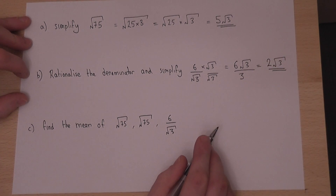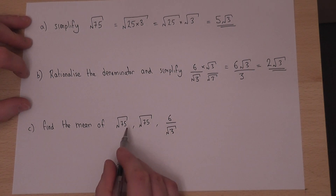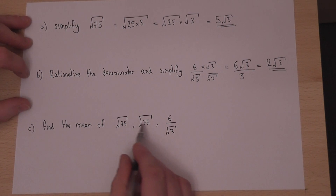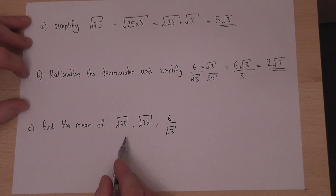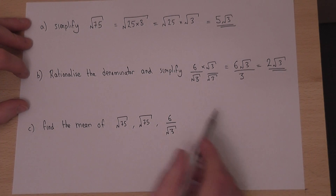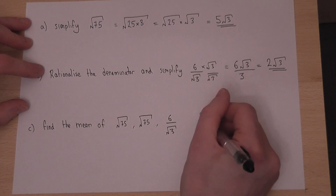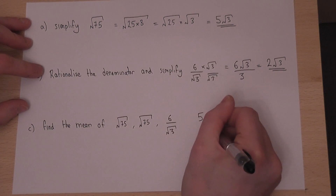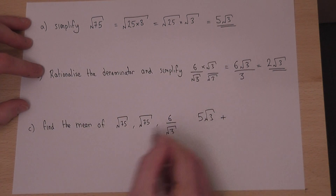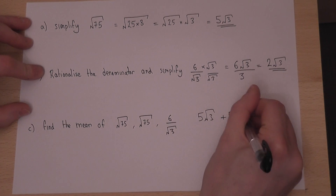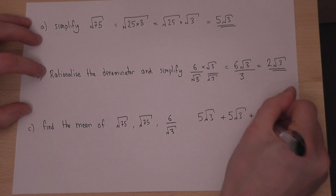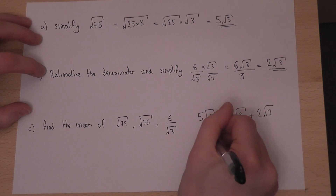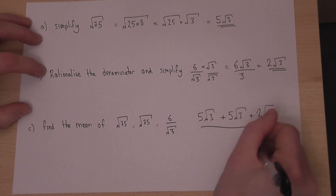In part C we're asked to find the mean of these three numbers. The mean is to add up and then divide, in this case by 3. We know that root 75 is 5 root 3, there's another 5 root 3, and then a 2 root 3. These must then be divided by 3.